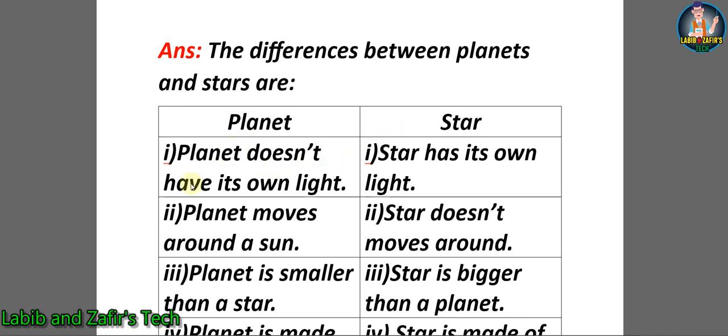Number one: Planet doesn't have its own light. Star has its own light. Planet moves around the sun. The star doesn't move around.